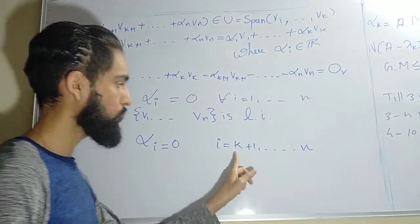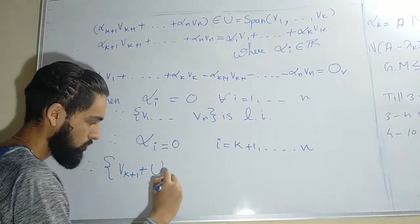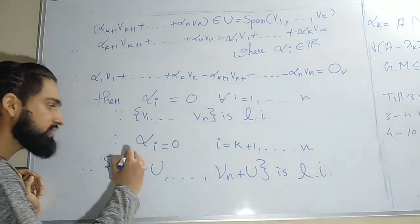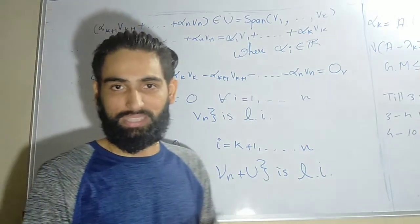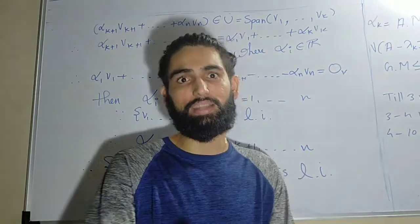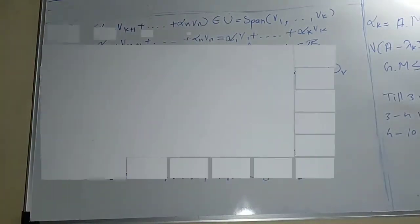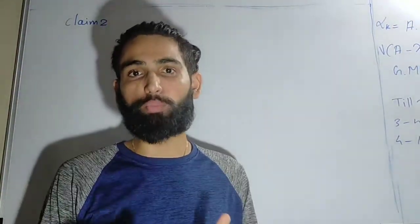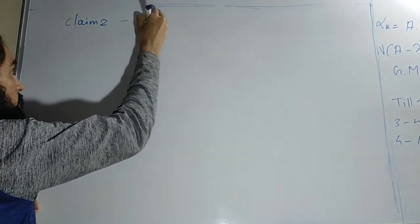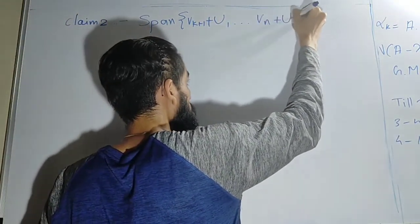Since αi = 0 for i from 1 to n, it is certainly true for k+1 through n also. Therefore we conclude the set {vk+1+U, ..., vn+U} is linearly independent, because whatever scalars we choose, they must all be zero — the only way to reach the zero coset is the trivial way. Now we go for the second claim: we will prove it is also a spanning set.